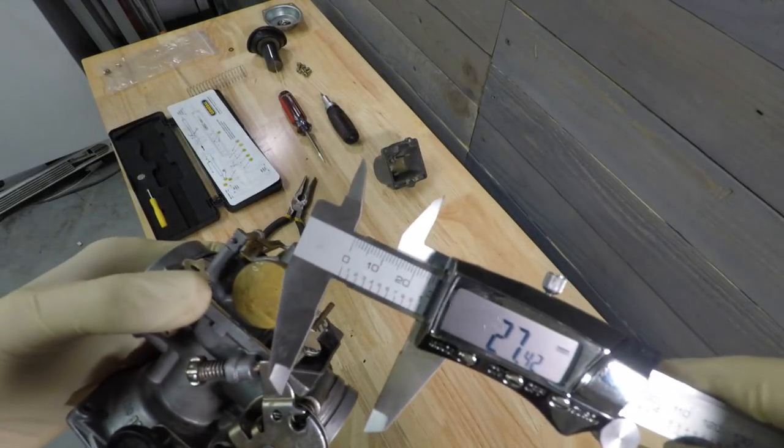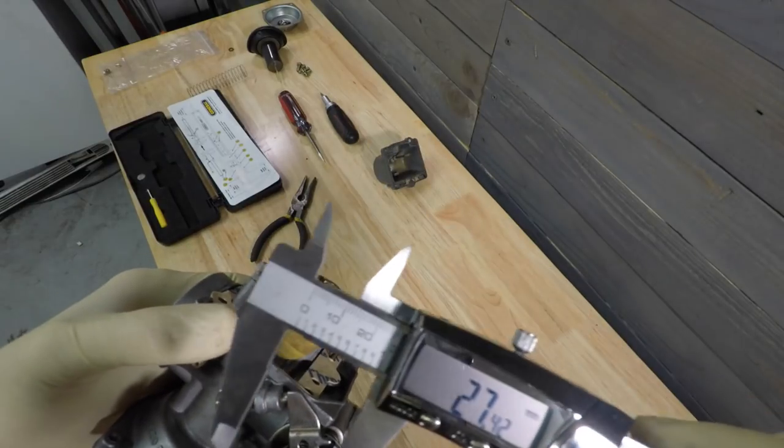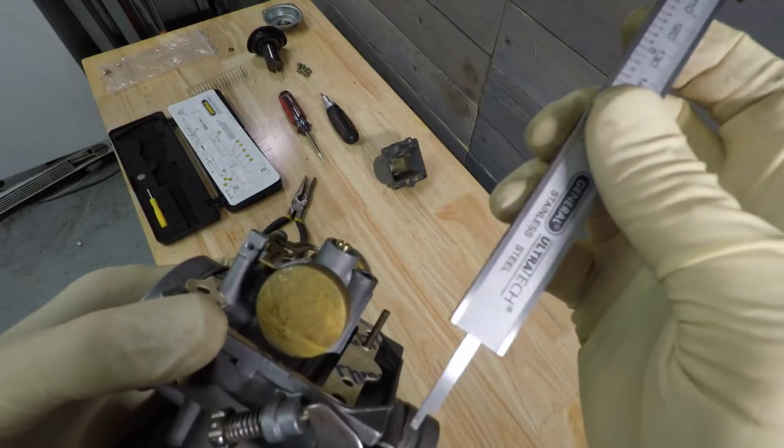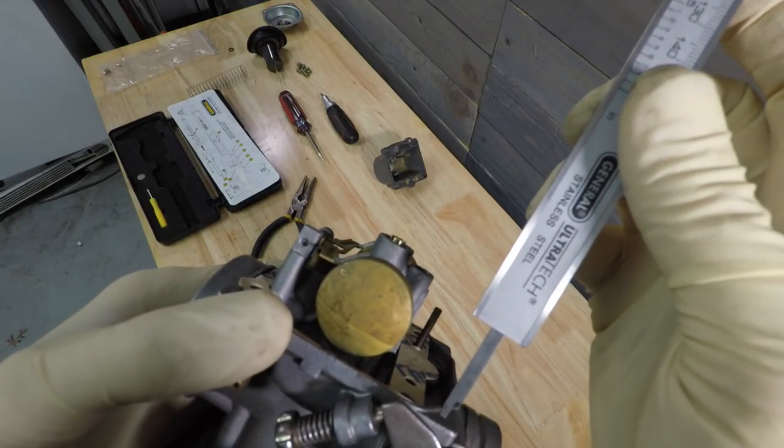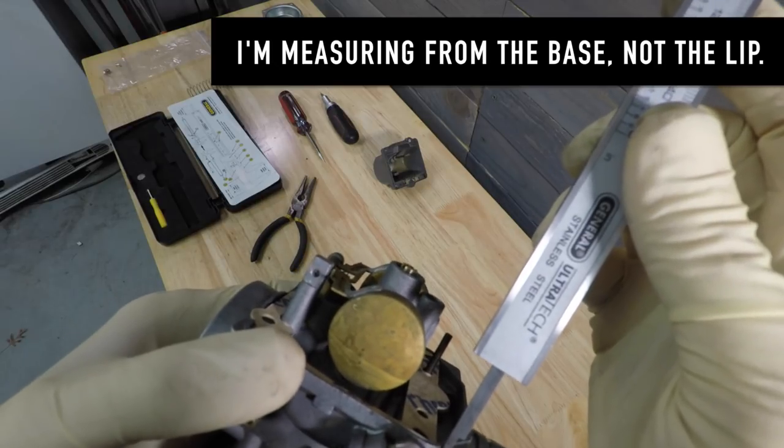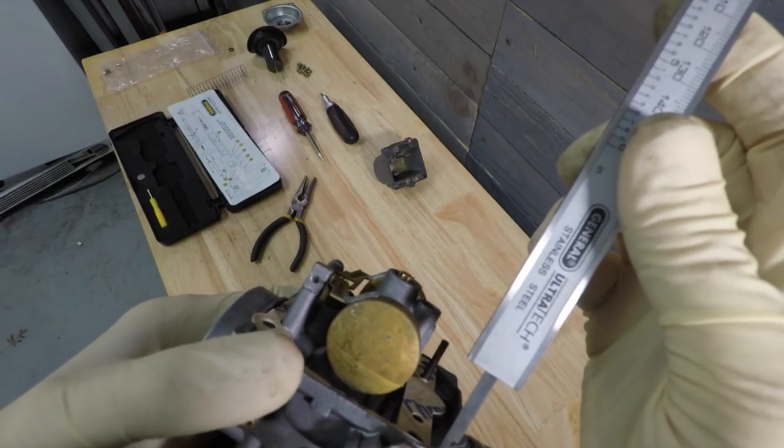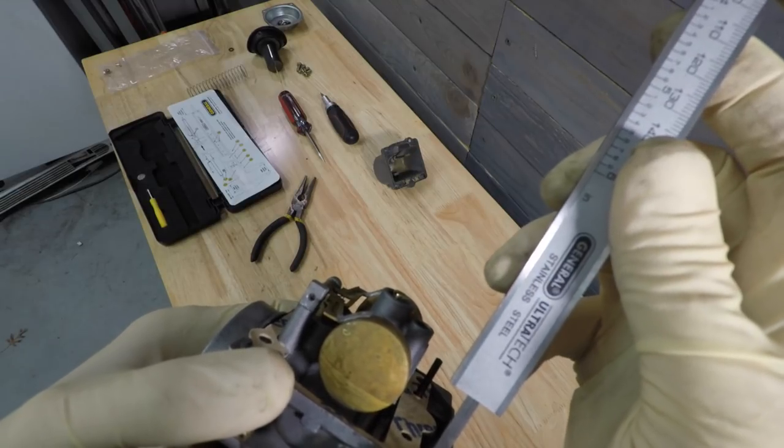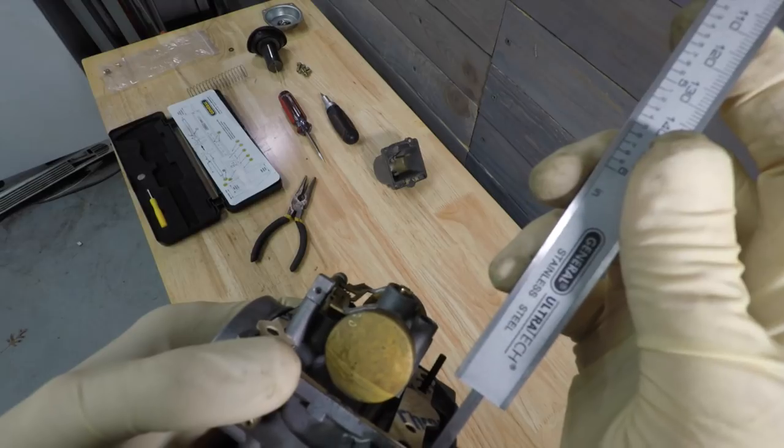And I'm using my caliper here. The service manual says 27.4 plus or minus one is where we want it. So you measure it from the very base of the carburetor body right there, not on the lip but right at the base. And you just kind of get an idea of where it's at. So to me that looks okay.